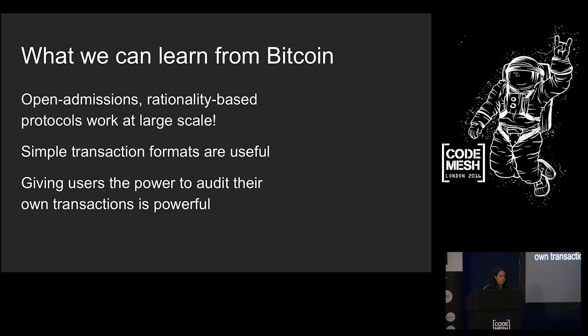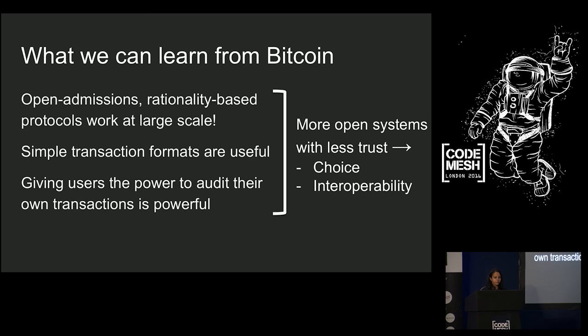But I think we can learn a lot from Bitcoin and there's a lot here that I find really interesting. So, first of all, an open admissions rationality based consensus protocol can work at scale. That is really cool. We've never seen that happening before Bitcoin. Second, simple transaction formats are really useful. And they enable all of this innovation. You can build all of these different types of applications on top of them. And then third, giving users the power to audit their own transactions is also powerful. Users don't have to trust intermediaries or third parties. They can actually validate things for themselves. And note that they don't have to validate things for themselves. If they want to trust a third party to do that, that's totally okay. But in this system, they have the option. And what this means is that we get more open systems with less trust and we end up having more choice and more interoperability.